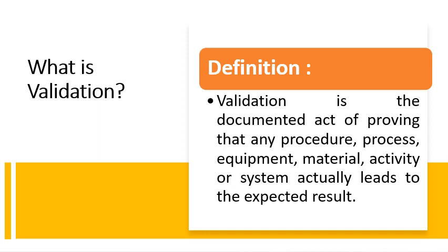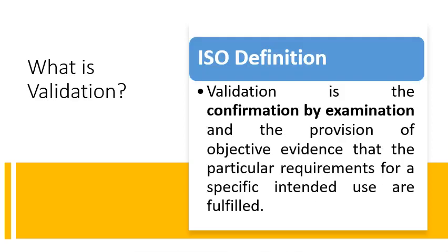That means the products that are manufactured meet the predetermined quality characteristics. The ISO definition of validation is a confirmation by examination and the provision of objective evidence that the particular requirements for a specific intended use are fulfilled.